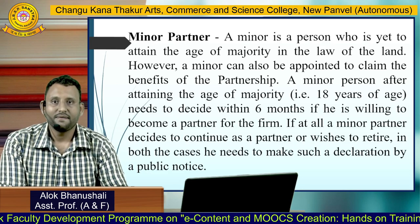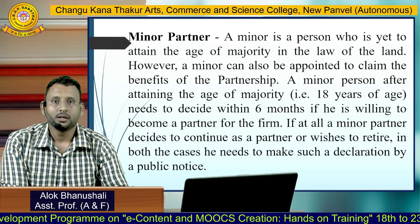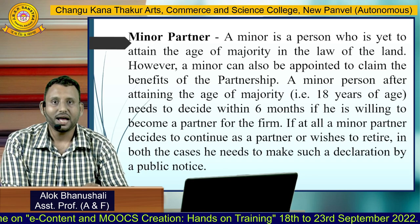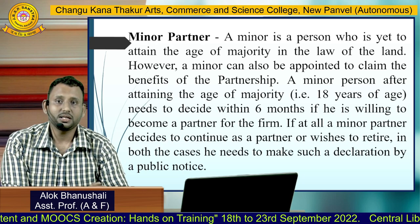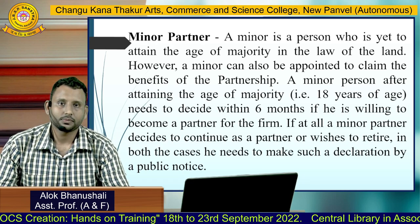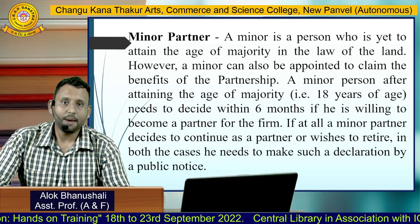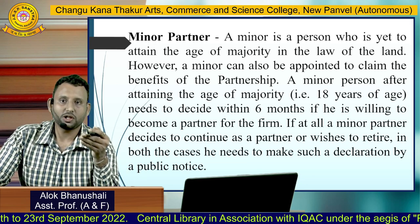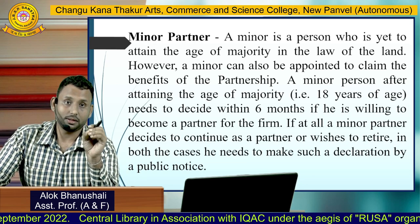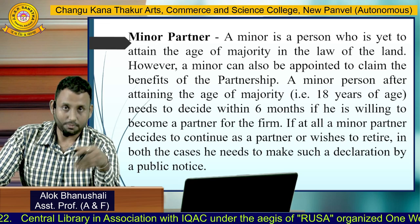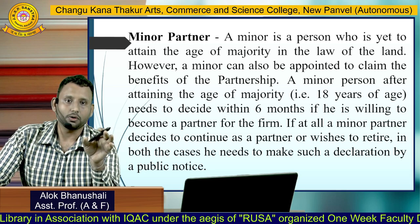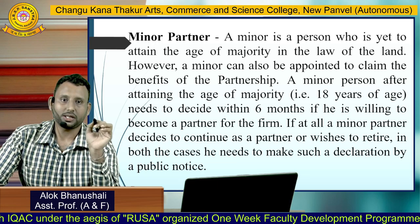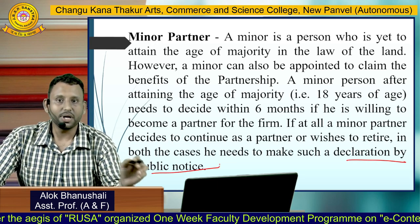Minor partner is a very interesting topic. A minor means a person who has not attained the age of majority, that is 18 years. If a partner is below 18 years of age, he is known as a minor partner. He can be a partner but only for the benefit. After attaining the age of 18, he has to decide within six months whether he is willing to continue as a partner or wants to discontinue. In both cases, he has to give a declaration in a public notice.